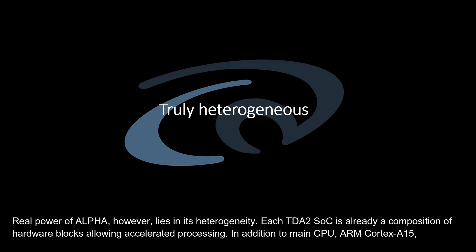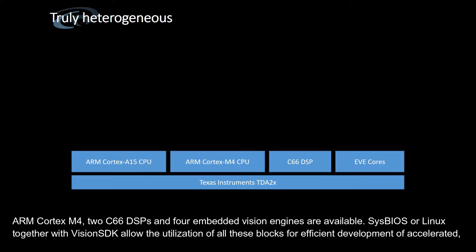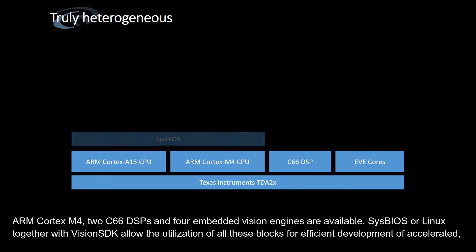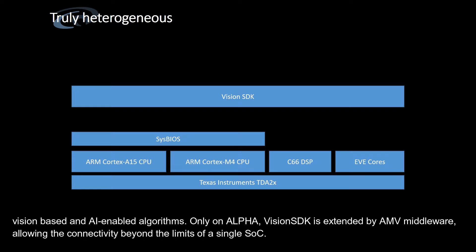The real power of Alpha, however, lies in its heterogeneity. Each TDA-2 SoC is already a composition of hardware blocks allowing accelerated processing. In addition to the main CPU ARM Cortex-A15, ARM Cortex-M4, two C66 DSPs and four embedded Vision engines are available. SysBIOS or Linux, together with Vision SDK, allow the utilization of all these blocks for efficient development of accelerated, vision-based and AI-enabled algorithms.